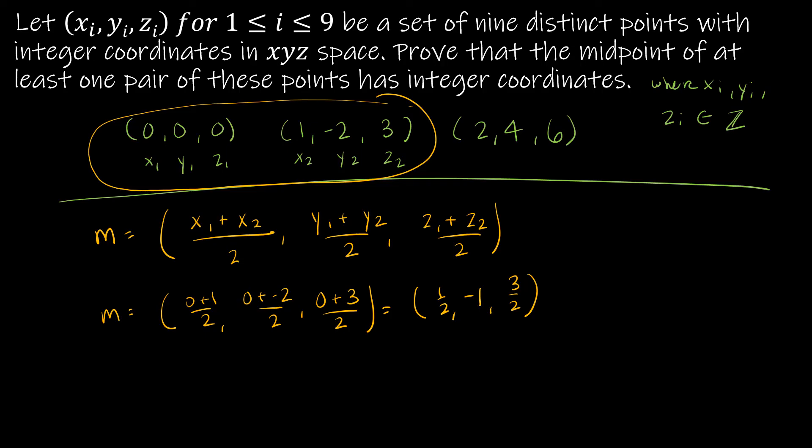The last part of this says we want the midpoint of at least one pair of these points to have integer coordinates. So this example that I just did with you, not integer coordinates. So really, I need it to be a member of Z × Z × Z, which it's not. So how do I ensure that when I add two things together and divide by two, that the result is in fact an integer?